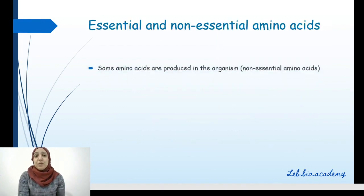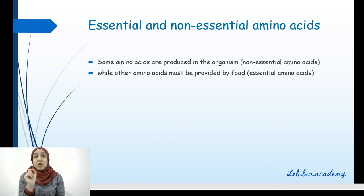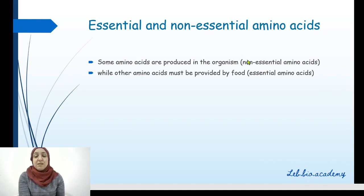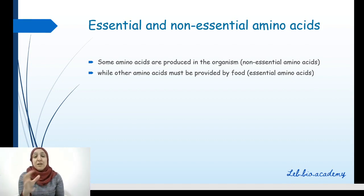Now, what's the difference between essential and non-essential amino acids? The essential amino acids are provided only by food. They are called essential because you cannot make them in your body — you have to take them from food. However, the non-essential amino acids — it's okay if you don't take them from food, because our body can synthesize them. So, essential means I have to take them from food; non-essential means they can be made by our body.